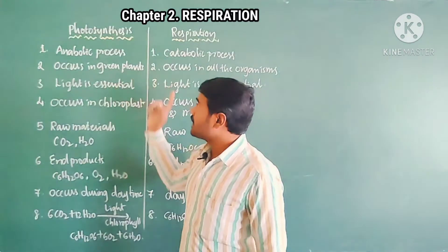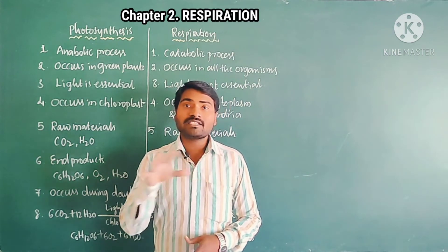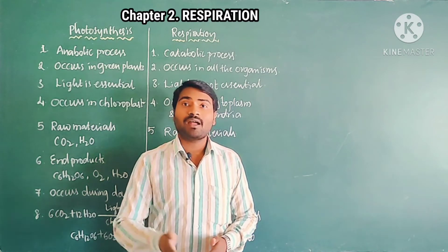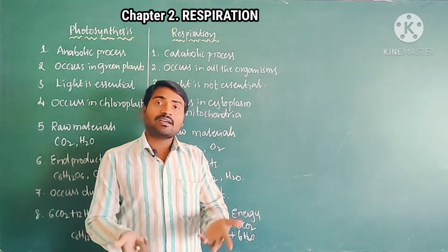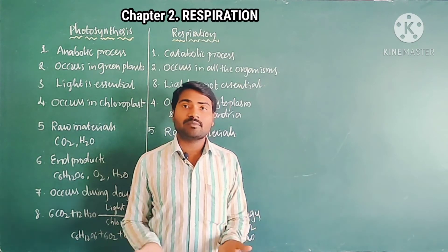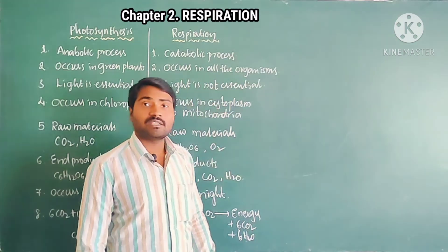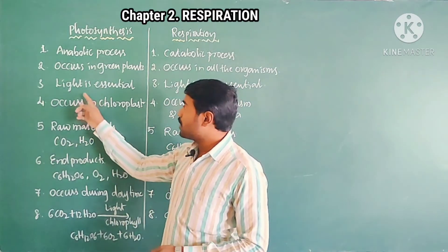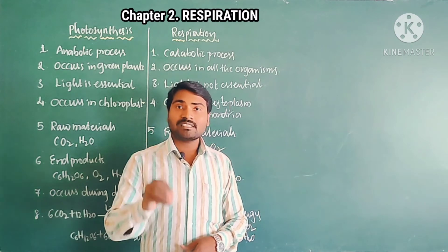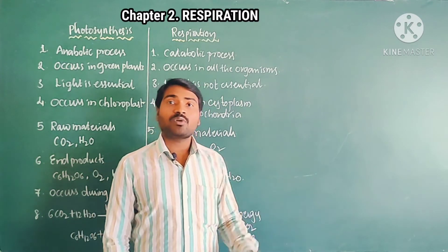Second point: photosynthesis occurs only in green plants — only in regions where chlorophyll is present, that is the green parts of the plant. But respiration occurs in all living organisms. Third point: light is essential for photosynthesis; it happens only in the presence of light. But for respiration there is no need for light.